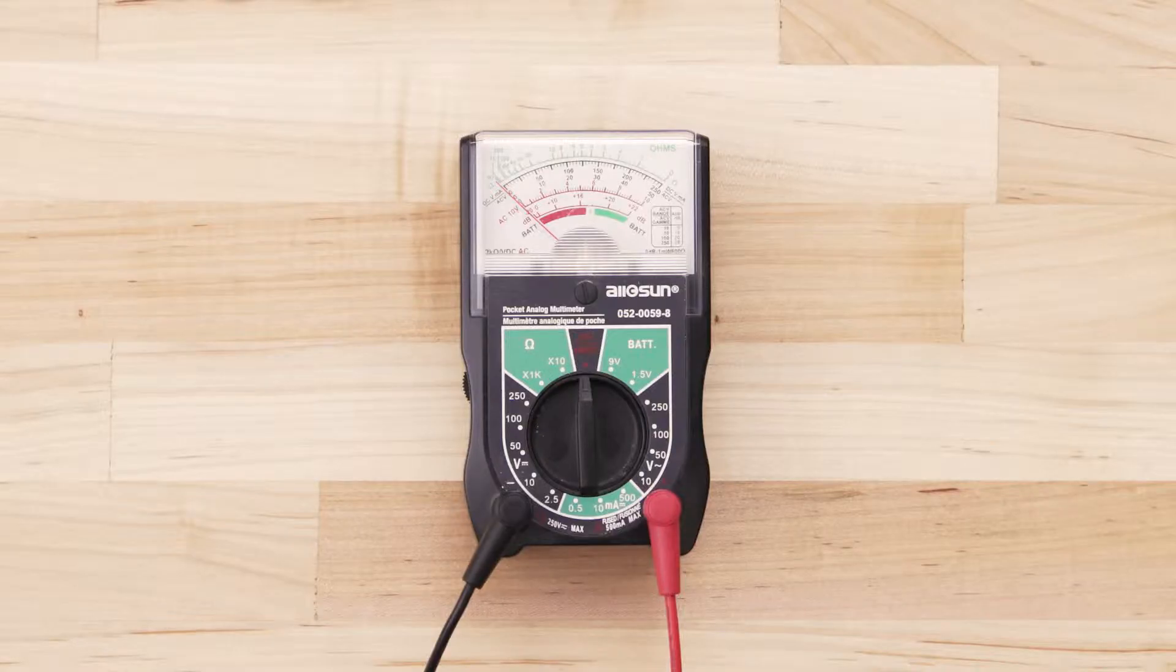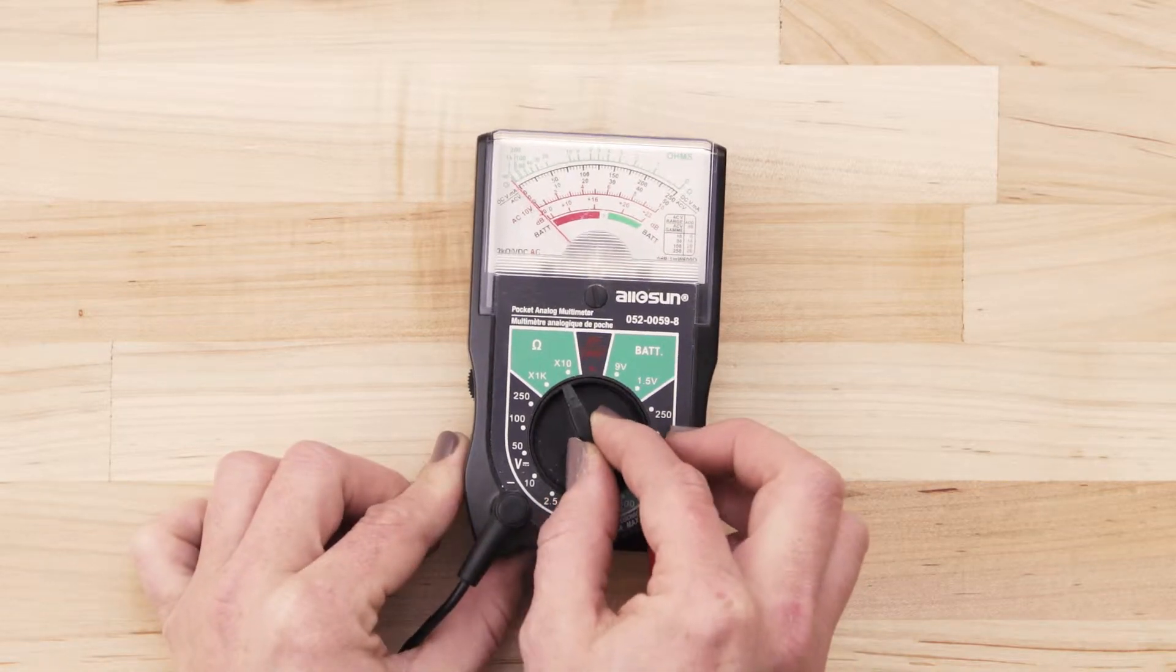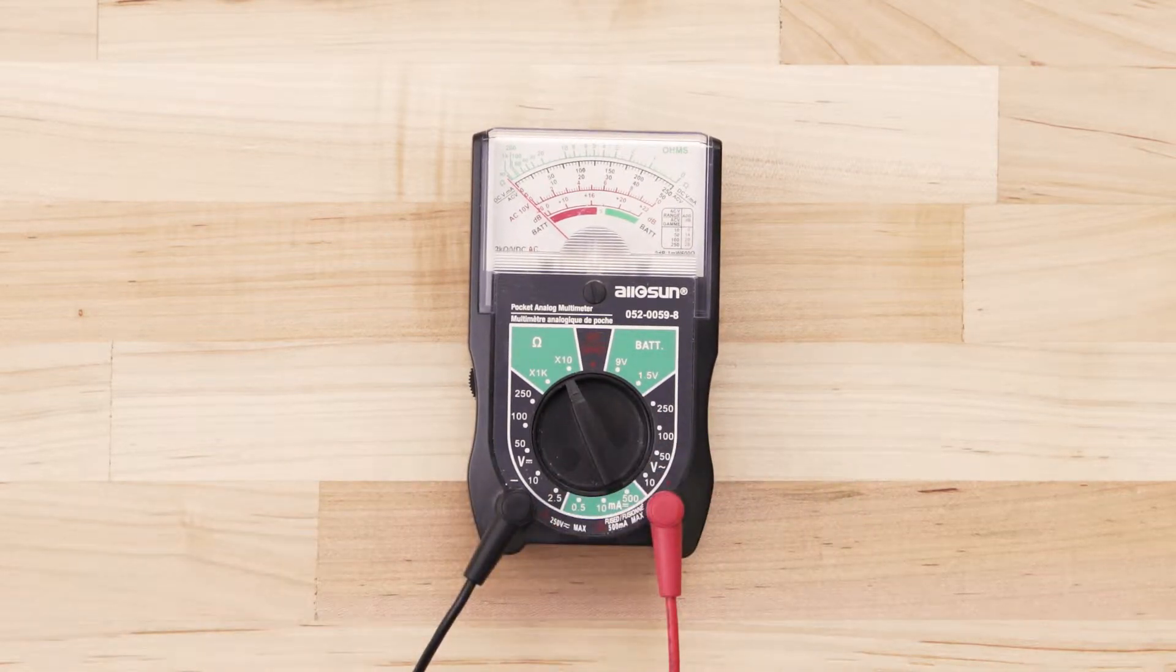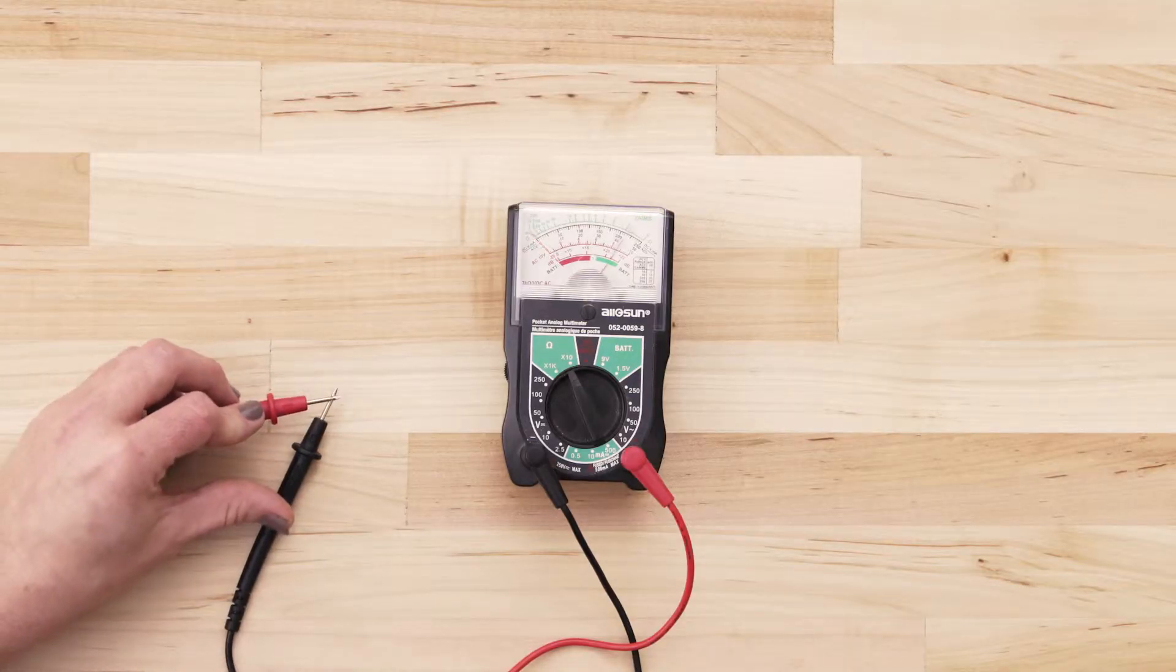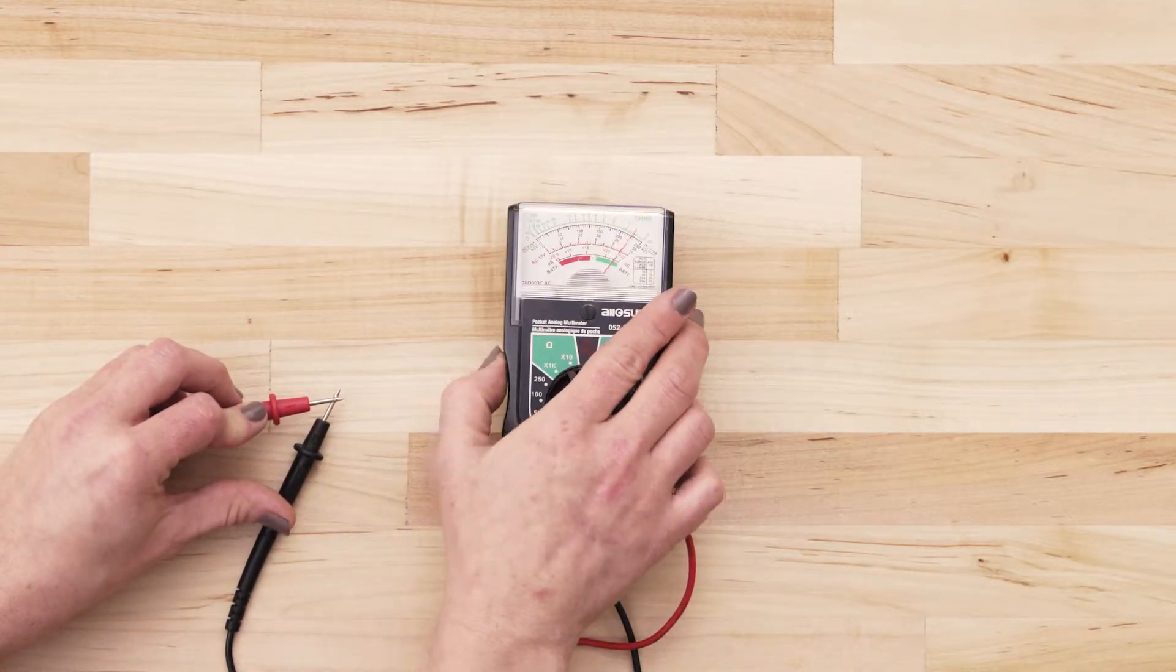If you use an analog multimeter, set the multimeter to the lowest ohms of resistance. Next, touch the probes together and adjust the needle until it's calibrated at zero.